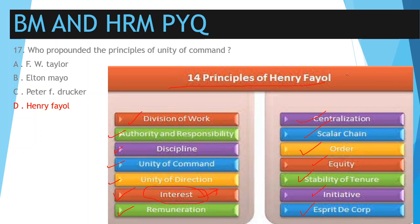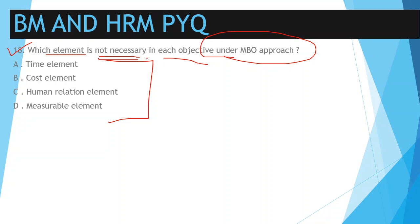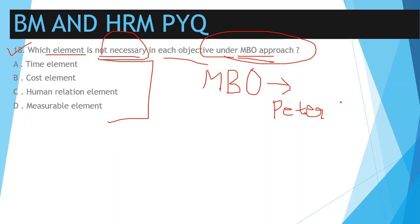Question number 18: which element is not necessary in each objective under MBO? MBO stands for Management by Objectives, and this was given by Peter F. Drucker in his book 'Practice of Management' — please make a note of it. The options are: A) time element, B) cost element, C) human relation element, and D) measurable element.